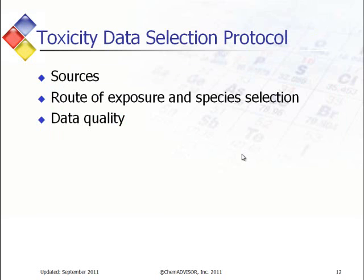That set of tables showed you the data we currently have within Lawley. Now we want to move over to how we determine which data actually gets incorporated into Lawley. We first want to look at what are the sources of data used within Lawley, how do we determine the route of exposure and the species associated with that route of exposure, and lastly, how is the correct piece of data chosen — data quality.